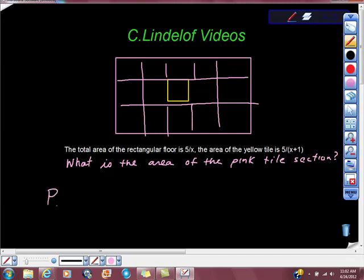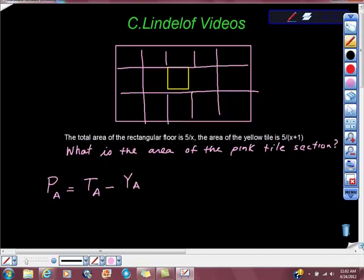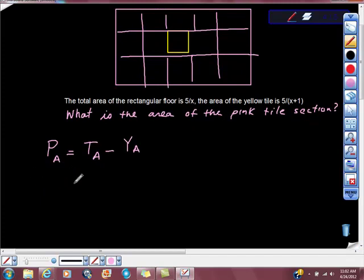The pink area is equal to the total area minus the yellow area, right? So to put that into action, that would be 5/x minus 5/(x+1).